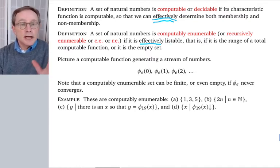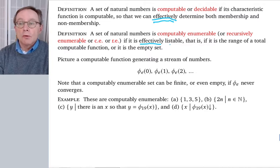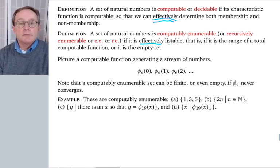So, effectively, again, means listable with a machine, because that's what we're interested in. We're interested in those things that are mechanically computable. But here, this is the difference between determine yes or no, and just simply be able to say yes. So, a set of natural numbers is computably enumerable if it's effectively listable. That is, it's the range of a total computable function, or else it's the empty set.